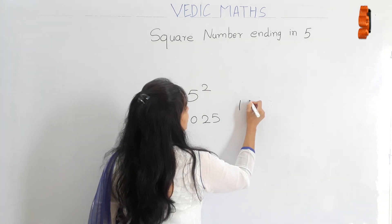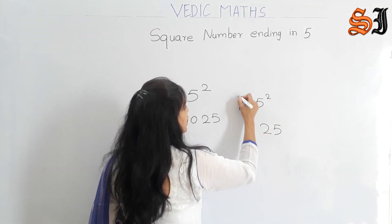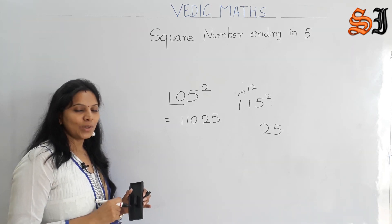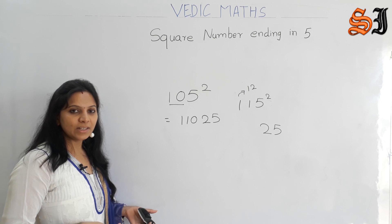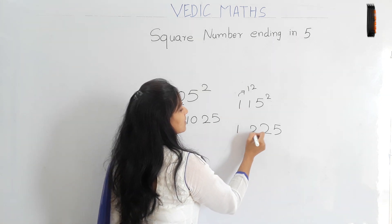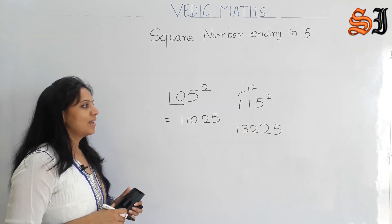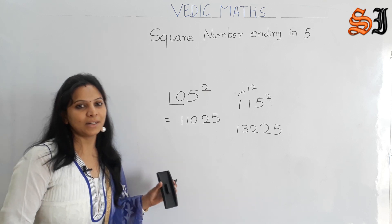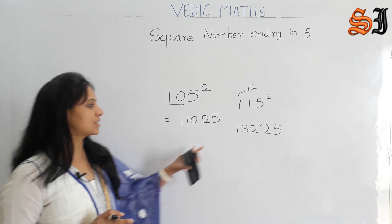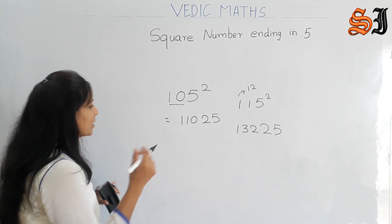For 115 squared: 5 squared is 25. Now 11 and 12 — we can apply the trick of multiplying by 11. You can apply the multiply-by-11 trick here: 1 and 2 as they are, with 1+2=3 in the middle, giving 132. So 115 squared is 13225. Practice is very important when applying these tricks.